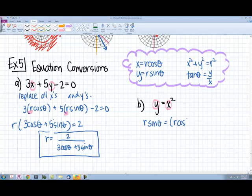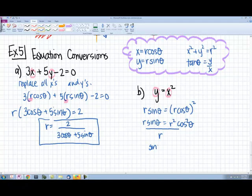r sine theta equals r cosine theta quantity squared. So I need to square everything on the right side. That's going to leave me with r squared cosine squared theta. We can divide out an r, so sine theta equals r cosine squared theta.